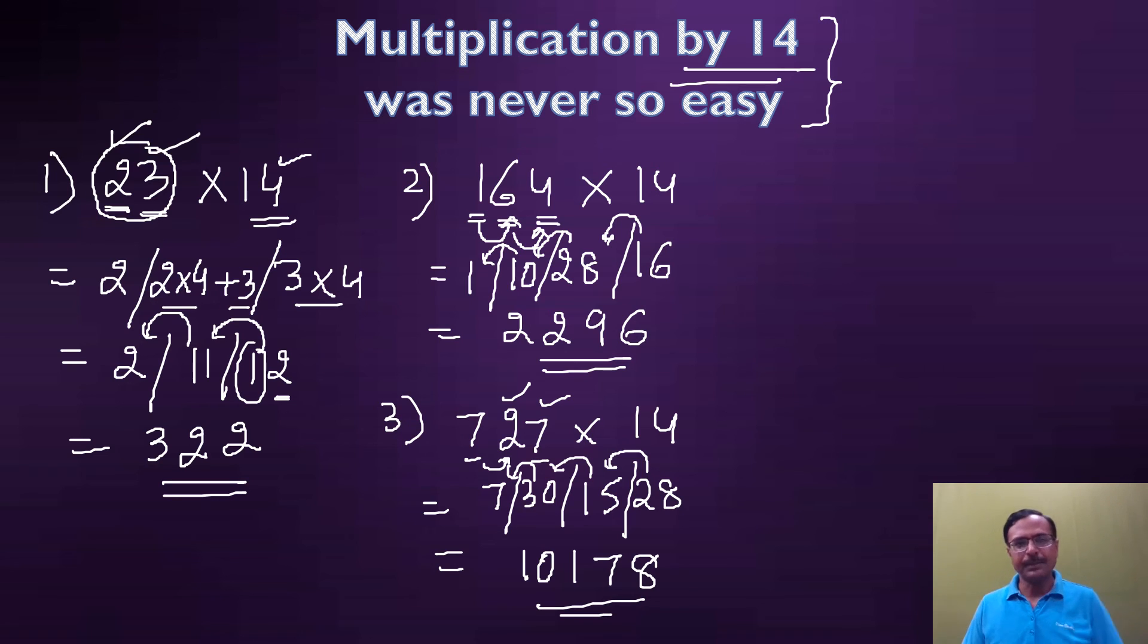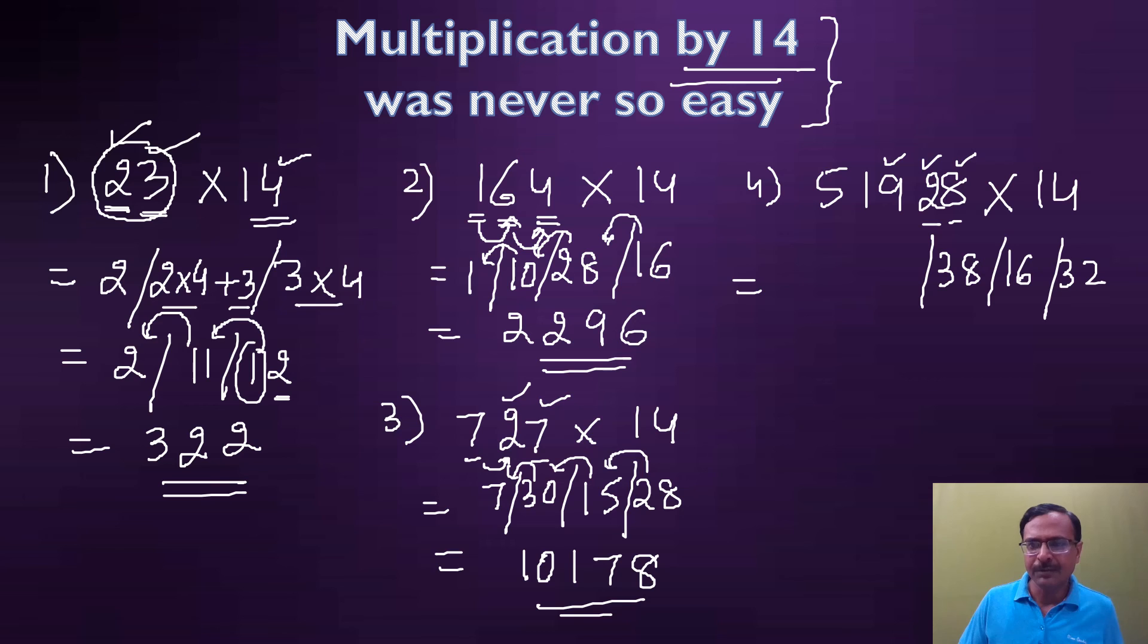Let's complicate the problem more and see whether we can do it for a four-digit number or a five-digit number directly. 51928, can we have that number multiplied by 14? Watch me doing it now. 8 times 4 is 32. 2 times 4 is 8 plus 8 gives me 16. 9 times 4 is 36 plus 2 gives me 38. 1 times 4 is 4 plus 9 gives me 13.